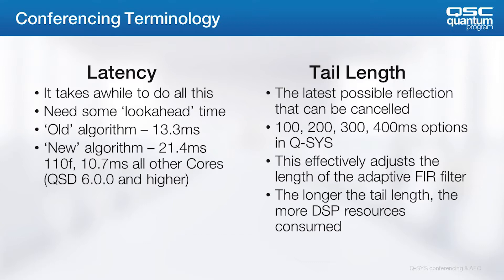The input to output audio latency through Q-SYS is 3.17 milliseconds without AEC in the signal path. The AEC algorithm introduces 21.4 milliseconds into the signal path of the 110F, and 10.7 milliseconds for all other Q-SYS cores. That's a total latency of 24.57 milliseconds in the Core 110F and 13.87 milliseconds in all other cores. Conferencing systems aren't typically latency-sensitive applications — it usually takes far longer for the signal to travel to the far end, so this is just one component of the overall conferencing latency.